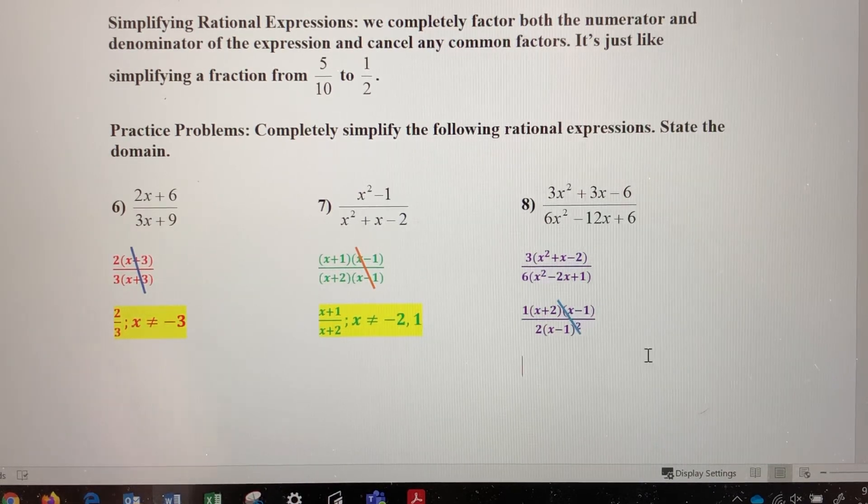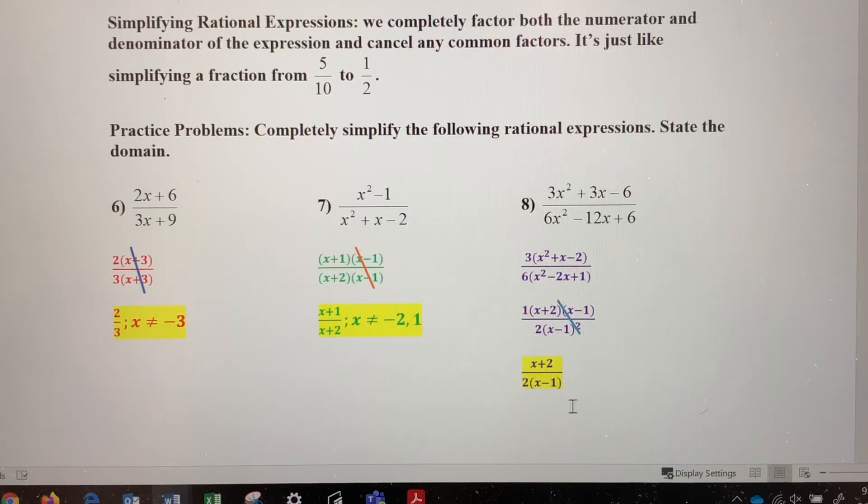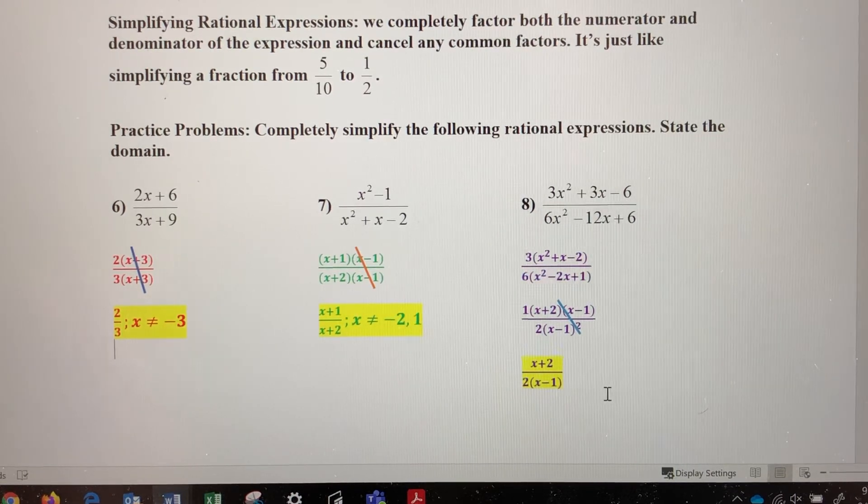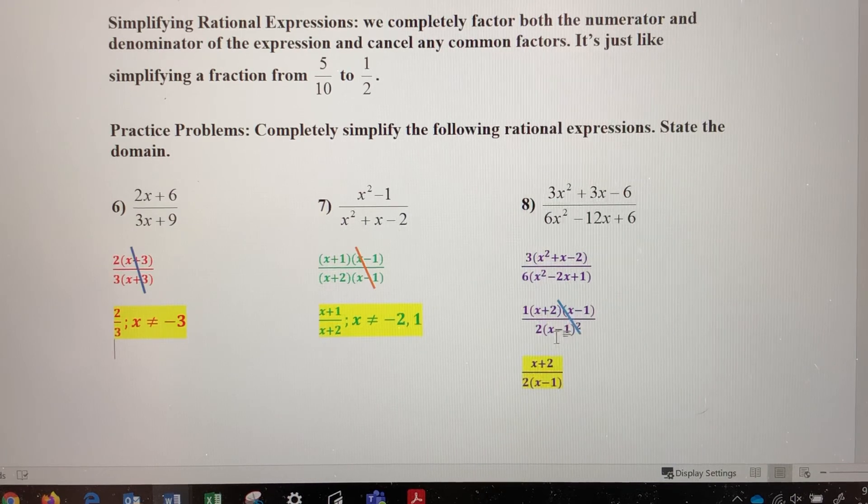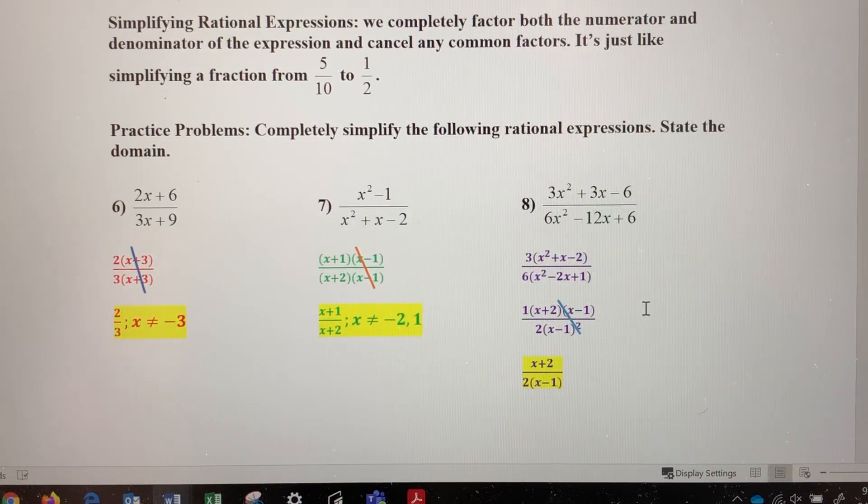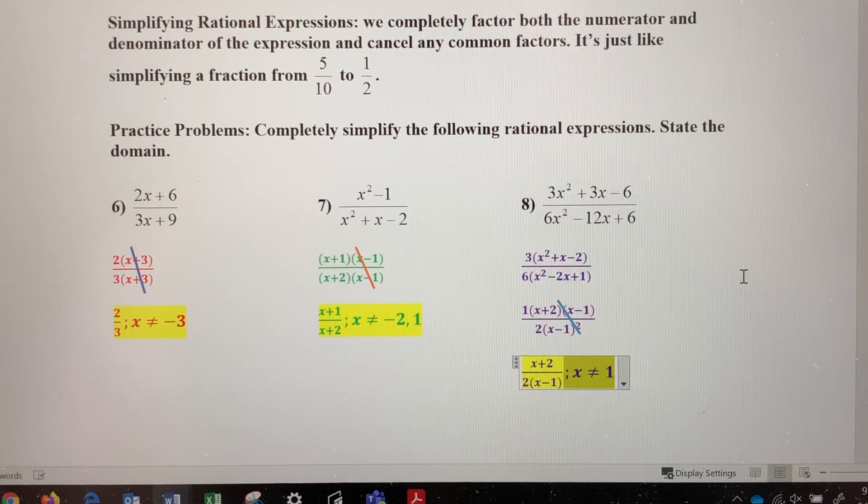So my final answer then is going to be x plus 2. That's all that's left in the numerator. Over 2 times x minus 1 in the denominator. There's only one value that needs to be excluded from my domain here. 1, the value 1, makes this factor 0. Nothing else would do that throughout the problem. So my domain is going to be x does not equal 1.